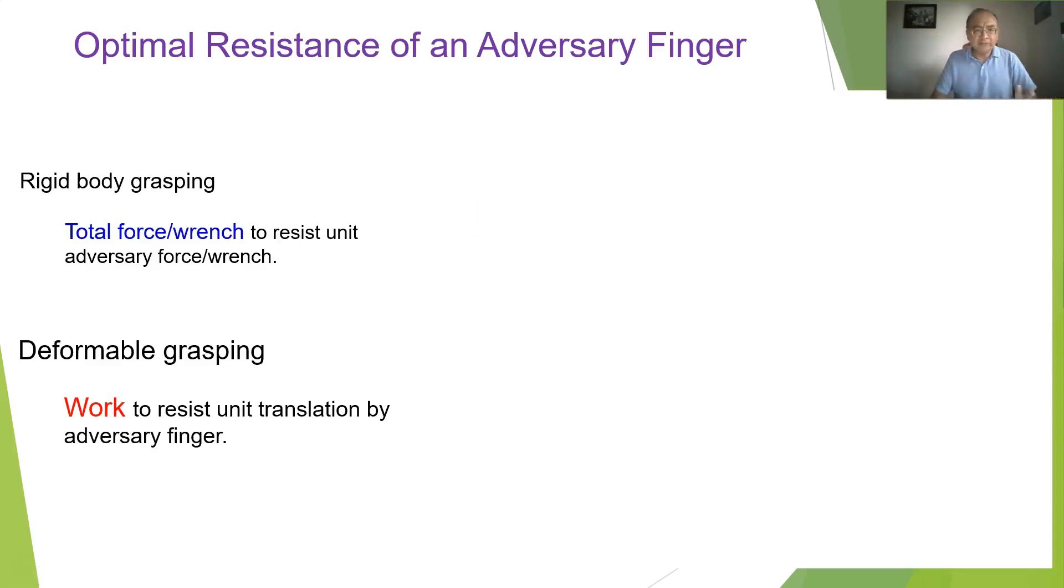So another thing we can look into is how to resist an adversary finger. So the optimal resistance used to be a very hot topic in rigid body grasping, where the quality of a rigid body grasp is often characterized by the amount of force or range to resist a unit adversary force and range exerted by external fingers. But again that concept no longer applies now here because the object is deforming.